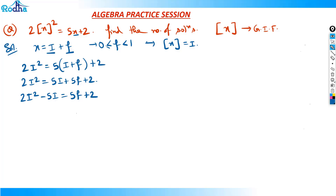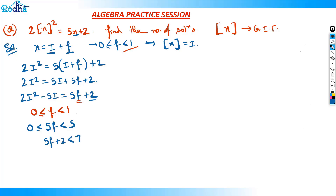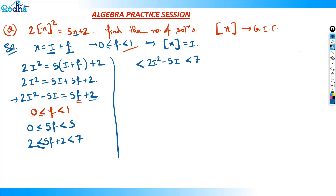Now concentrate on f. What is f here? f will always lie between 0 and 1 — 0 included, 1 excluded. So 5f will lie from 0 to 5, and 5f plus 2 will lie between 2 and 7. And I know that 5f plus 2 is actually 2i² minus 5i. That means 2i² minus 5i will be greater than or equal to 2 and less than 7.